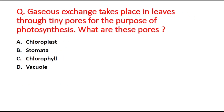Next question: gaseous exchange takes place in leaves through tiny pores for the purpose of photosynthesis. What are these pores? Option A is chloroplast, option B is stomata, option C is chlorophyll, and option D is vacuole. The right answer is option B, these pores are called stomata.